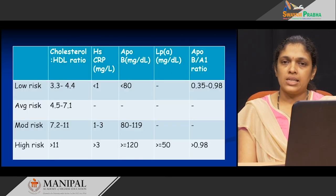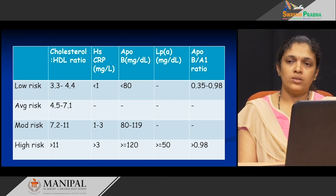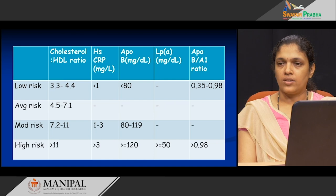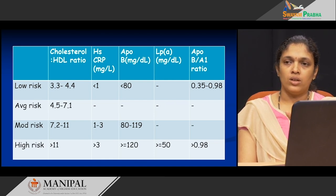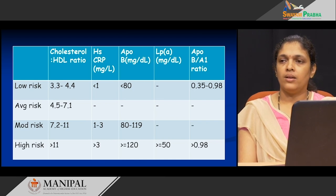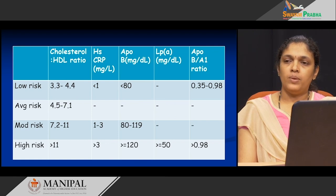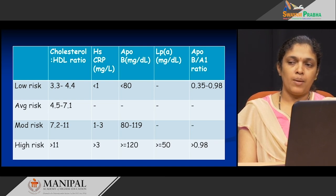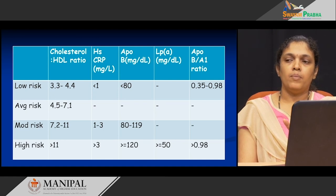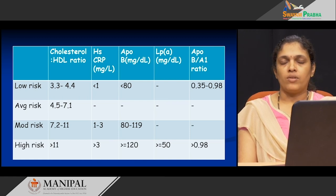What should be the normal levels for these extended lipid profile tests? There are various risk categories: low risk, average risk, moderate risk, and high risk. The cholesterol to HDL ratio between 3.3 to 4.4 indicates low risk; above 11 indicates high risk of coronary artery disease. For HSCRP, less than 1 mg/L is low risk; more than 3 mg/L is high risk. Apo B should be less than 80; if more than 120, there is high risk. Lipoprotein(a) above 50 mg/dL is dangerous. The ratio of apo B to apo A1 should be between 0.35 to 0.98; above 0.98 indicates high risk of coronary artery disease.